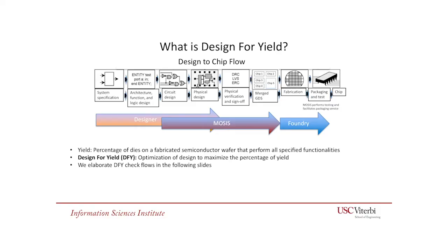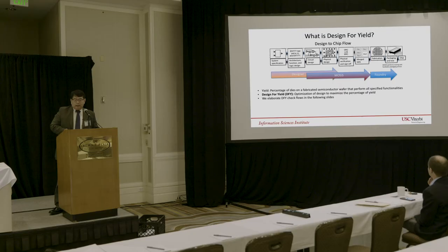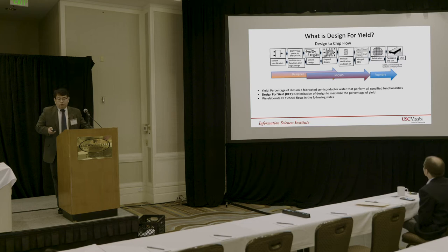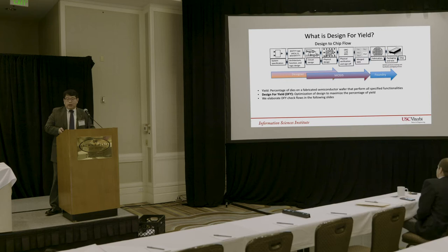You work with teams like MOSES to do tape-out and mask preparation, which includes physical verification, DRC, and meeting requirements for the NPW merged GDS. Then the FAB does fabrication, you get the wafer out, dice and package them, so you receive packaged die to implement your system — a car, a computer, or whatever you want. Yield describes a very essential property of fabrication: it measures the percentage of dies on a fabricated semiconductor wafer that perform all of the specified functionalities.